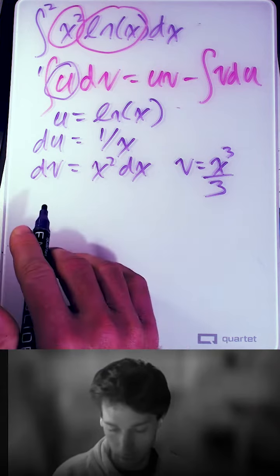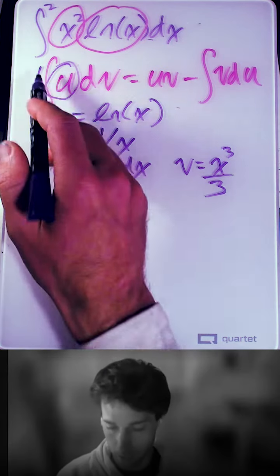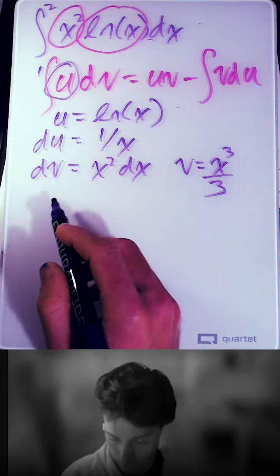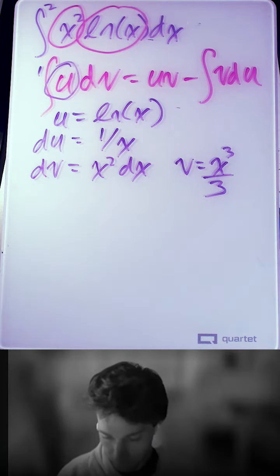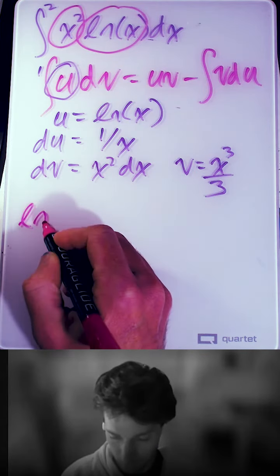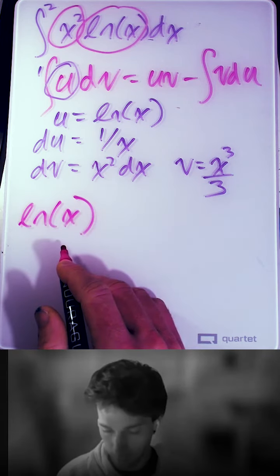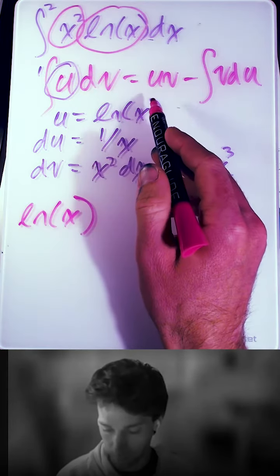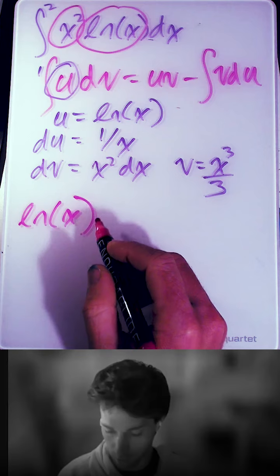I'm just going to show how to set it up. So our integral of x squared ln of x is equal to uv, ln of x times v, which is x cubed over 3.